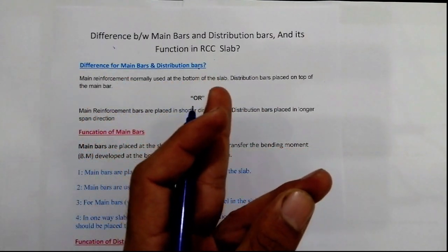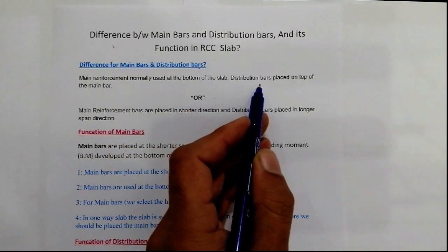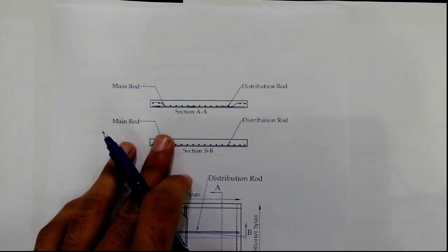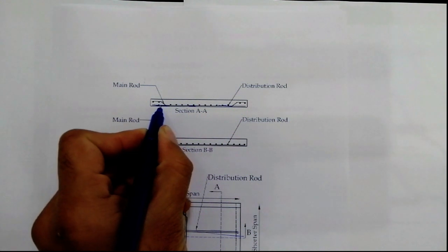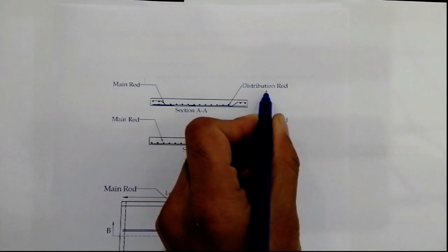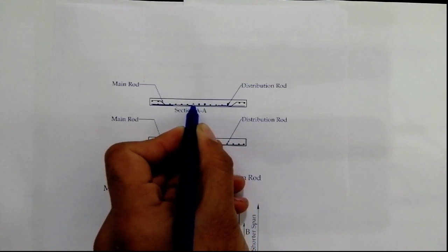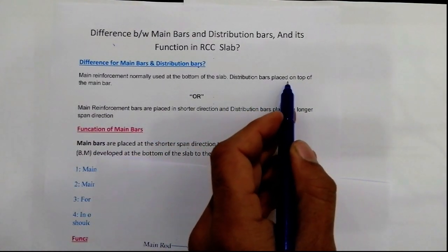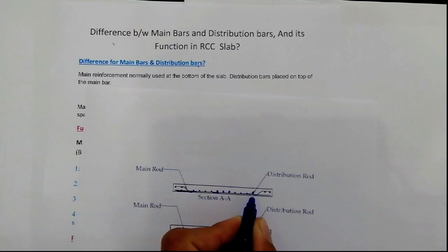This is a simple definition of main bars and distribution bars. If a person asks you what is main bar, you can say that main bars are normally used at the bottom of the slab, and distribution bars are placed at the top of the main bars. Here is a diagram — in cross section you can see this RCC slab. The main bar is at the bottom of the slab, and distribution bars are placed on top of the main bar. You can see the dots — those are distribution bars.